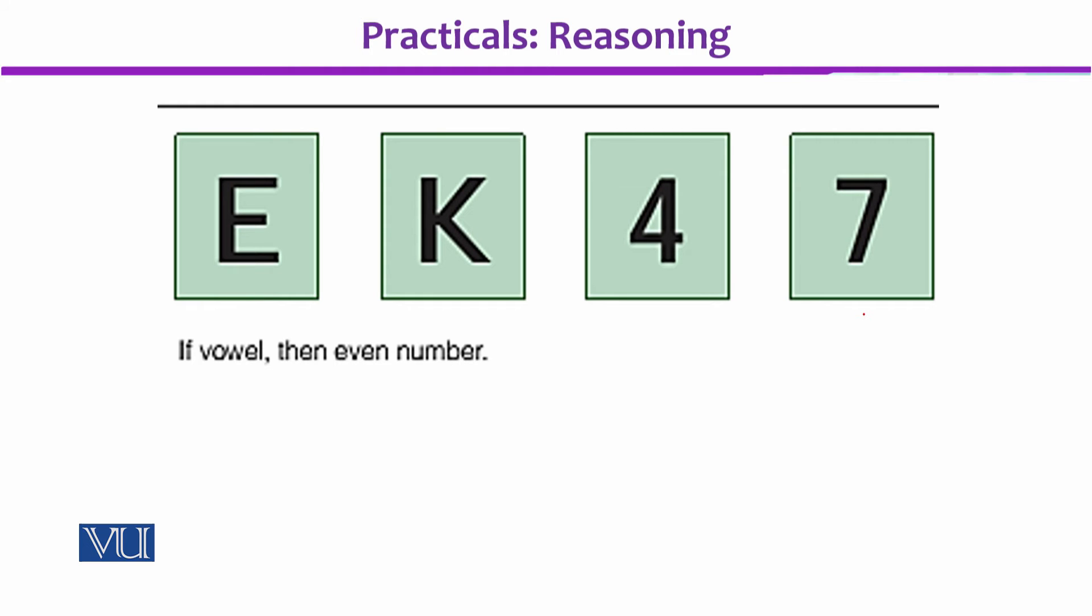The rule for the reasoning in this task is: if vowel, then even number. So you can see that you have cards with E, K, 4, and 7.